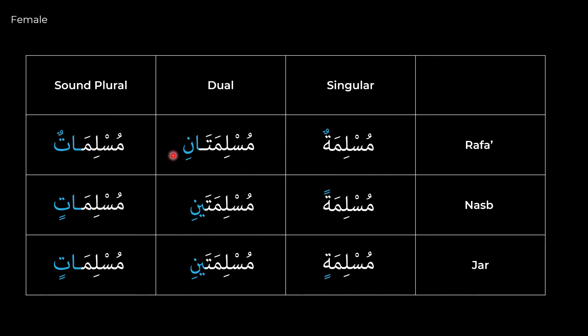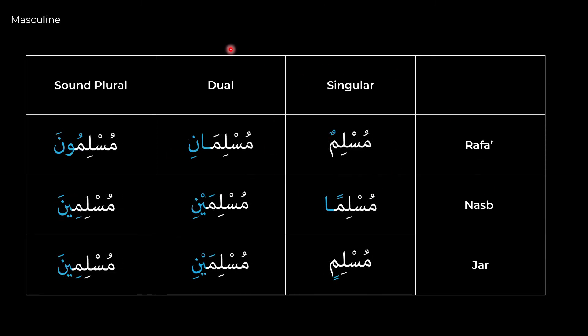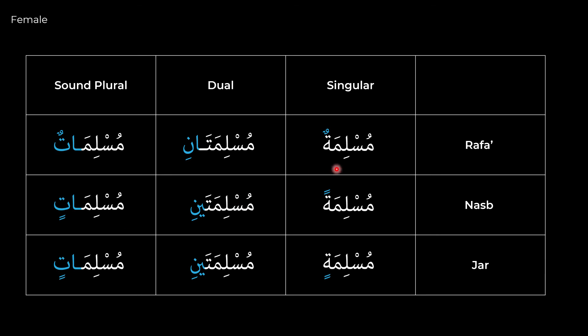Getting this chart down is a tremendous service to yourself. Let's do a quick example with the word mu'minun. Putting it through the chart: mu'minun, mu'minani, mu'minuna — mu'minan, mu'minaini, mu'minina — mu'minin, mu'minaini, mu'minina. Then if it were feminine, it would be mu'minatun, mu'minatani, mu'minatun.